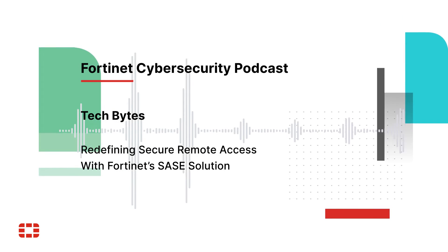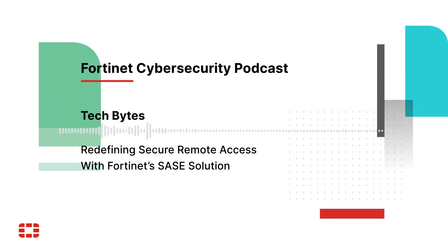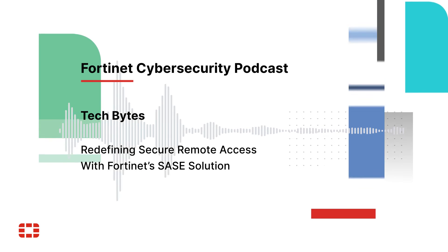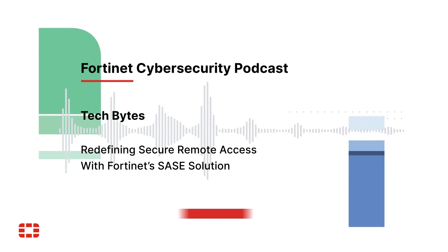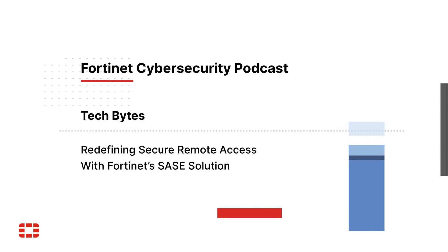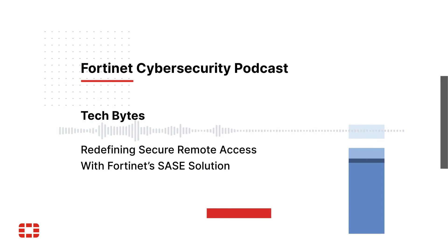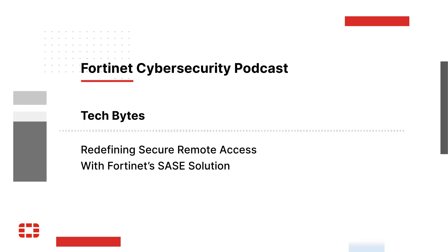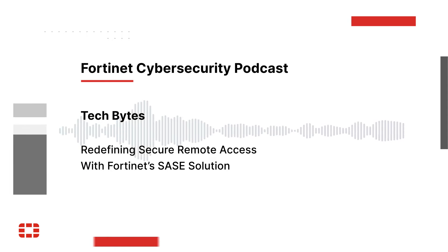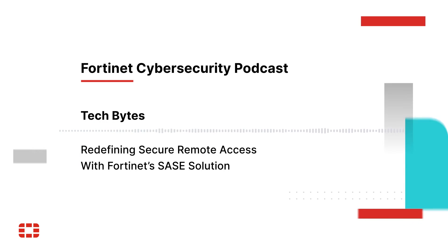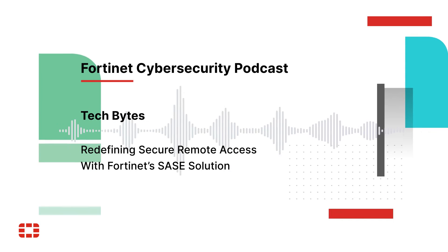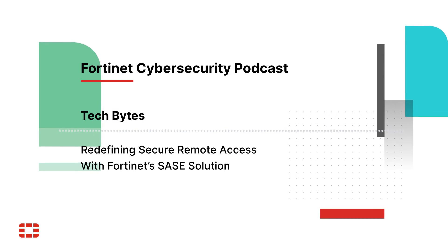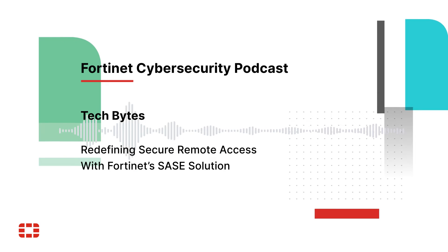Let's get into the details of the SASE offering. We touched on the endpoint element, but there is the cloud-delivered security part — which is really what people are looking for from SASE. There are three distinct use cases. The first is secure internet access: before a remote user goes out and accesses any internet or SaaS application, they get that always-on inline security. We talked about the security effectiveness behind that.